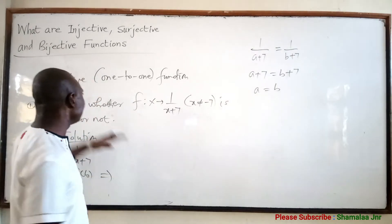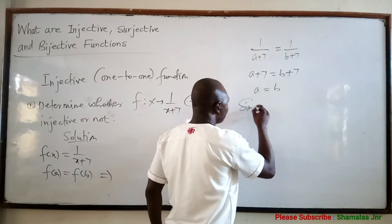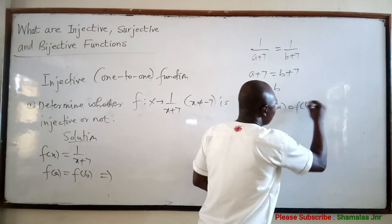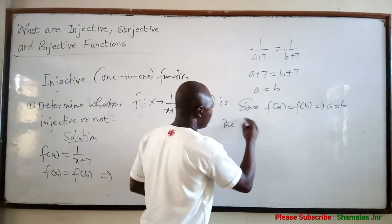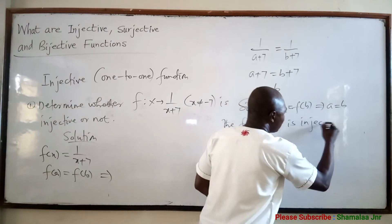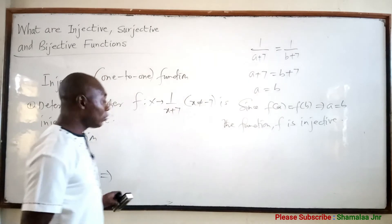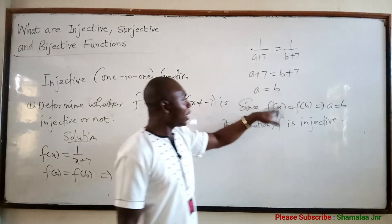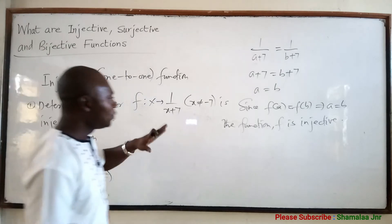Because we have been able to show that F(A) = F(B) implies A = B, we can say that this function is a one-to-one function. Since F(A) = F(B) implies A = B, function F is injective or one-to-one. Just find F(A) = F(B) and work it. If you get A = B, then you can say that the function is injective or one-to-one.